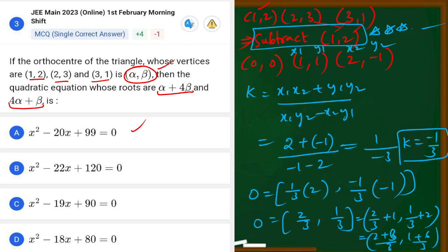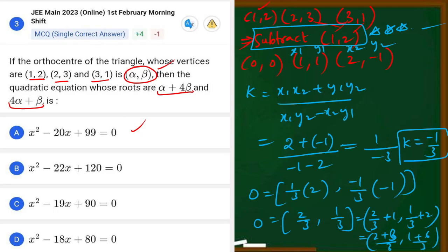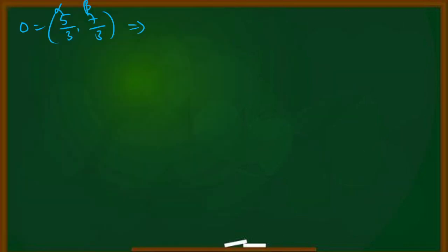The orthocentre is (alpha, beta), so alpha = 5/3 and beta = 7/3. We now substitute these values to find the two roots: alpha + 4 beta and 4 alpha + beta.